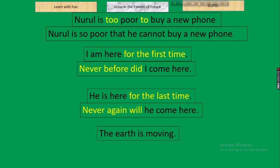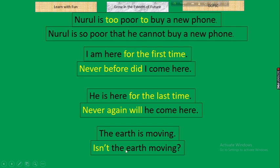Next: 'The earth is moving' — a universal truth. What will happen? We make it a negative interrogative. 'Isn't the earth moving?' Similarly, 'Health is wealth' → 'Isn't health wealth?' Rule: for universal truths, convert the affirmative sentence to a negative interrogative form.